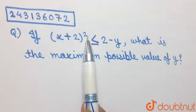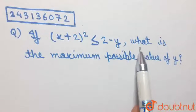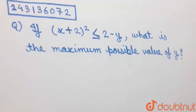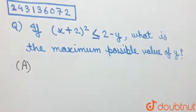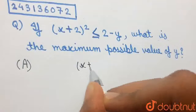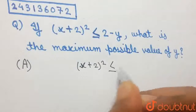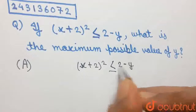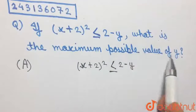If (x + 2) whole squared is less than or equal to 2 minus y, what is the maximum possible value of y? We have been given an inequation which states that (x + 2)² ≤ 2 − y, and we have been asked to find the maximum possible value of y.